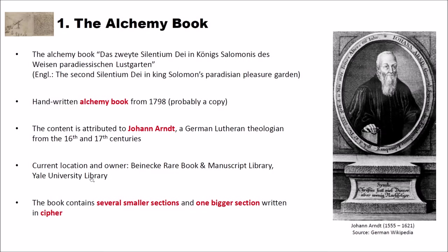And the current location and owner of the book is the Beinecke Rare Book and Manuscript Library of the Yale University Library. You may know this library because another very famous completely encrypted book is located in that library and that is the Voynich Manuscript. The Voynich Manuscript as I said is a completely encrypted book. We don't know the solution to that and maybe in the future I will also make a video about this. But in this video we will have a look at Das zweite Silentium Dei. And the book contains several smaller sections and one bigger section written in cipher. And that makes this book particularly interesting for us.